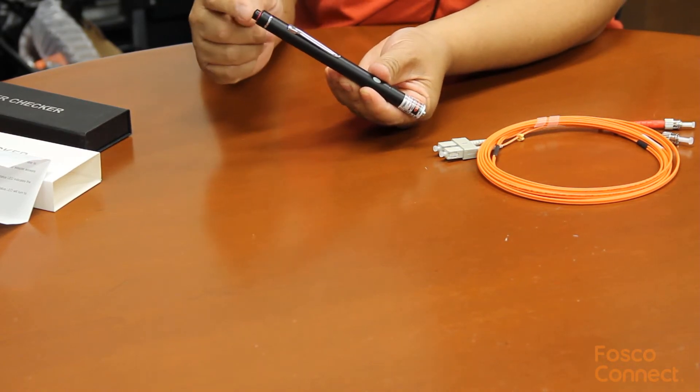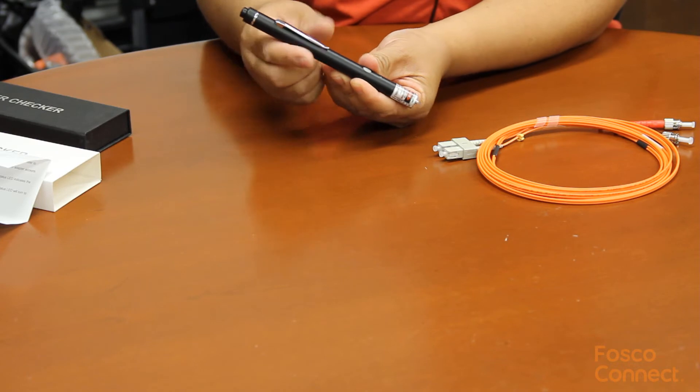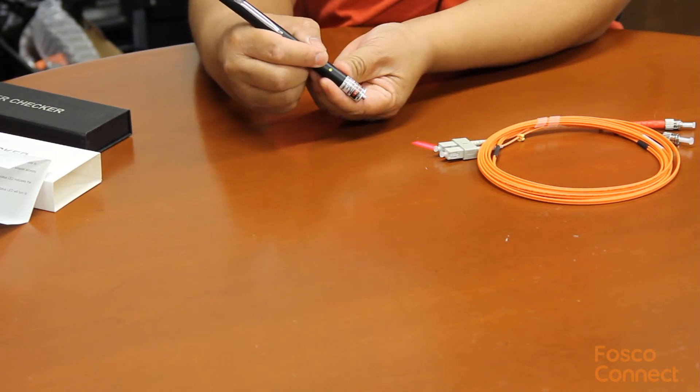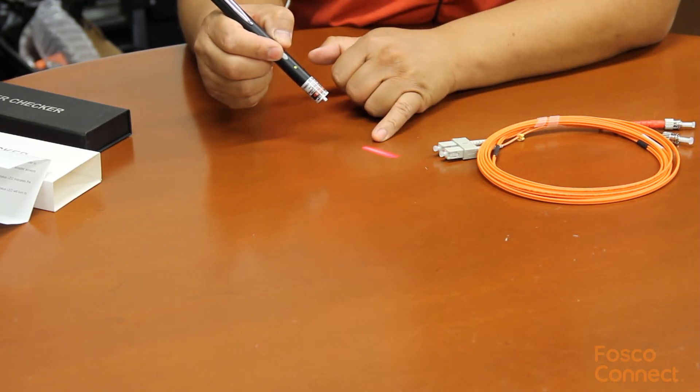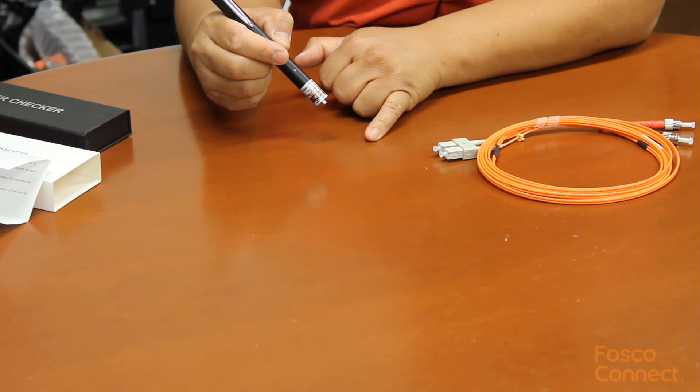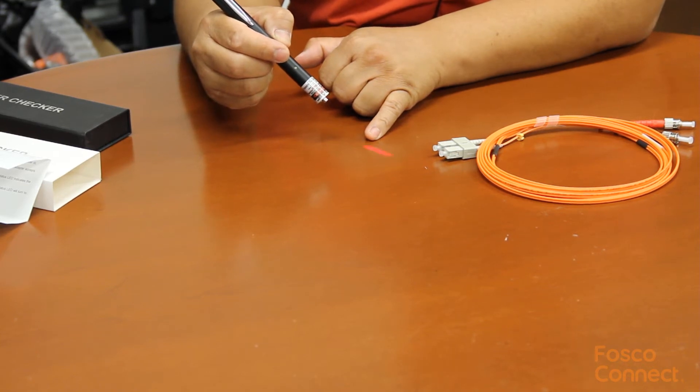And this is the on-off switch. So let's turn it on. It's not on because we need to select the operation mode. So press this button. This is continuous steady light mode. And this is flashing light mode. So we can use either mode.